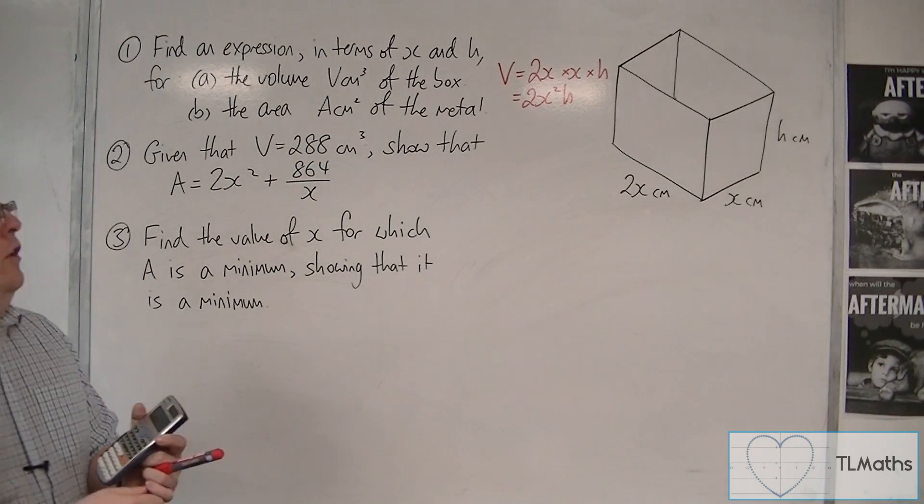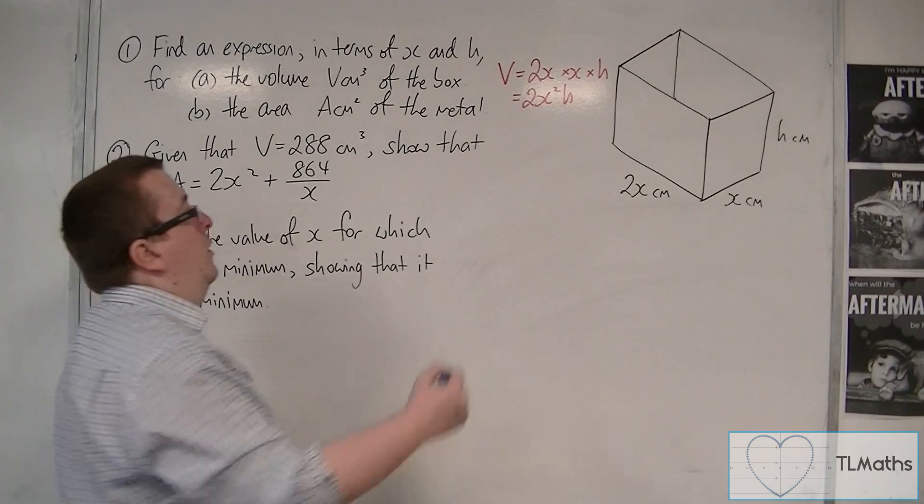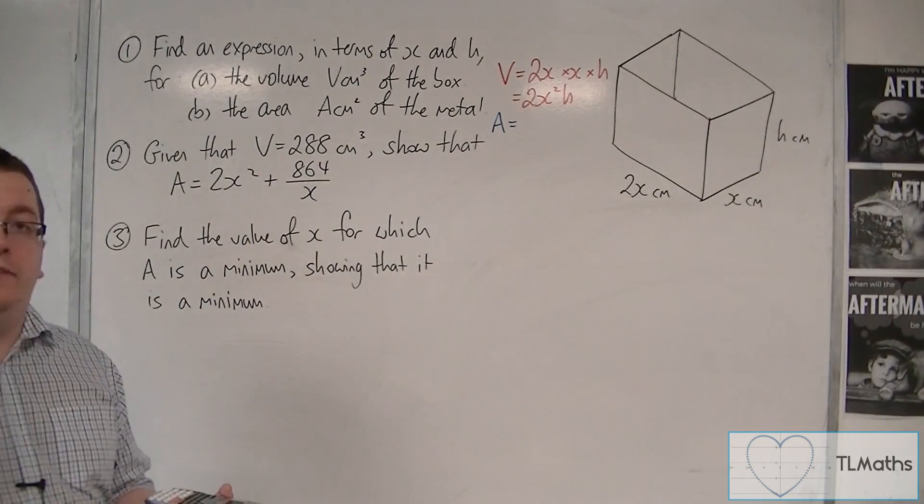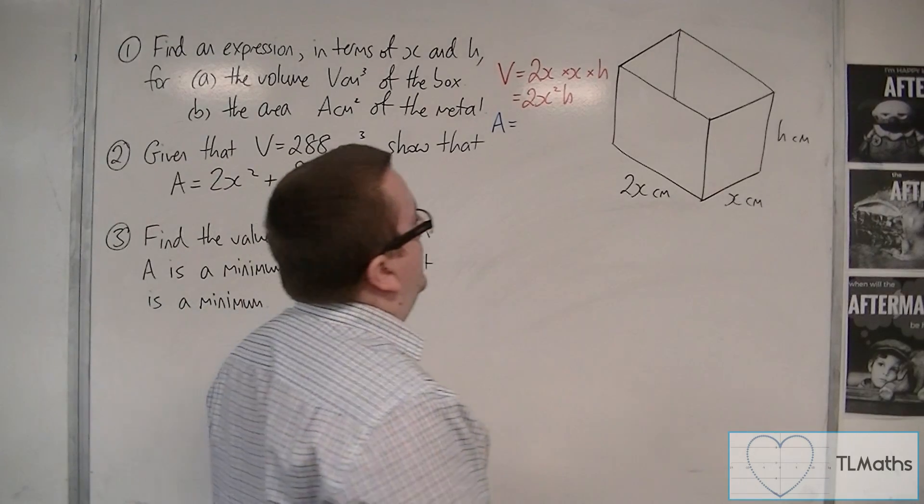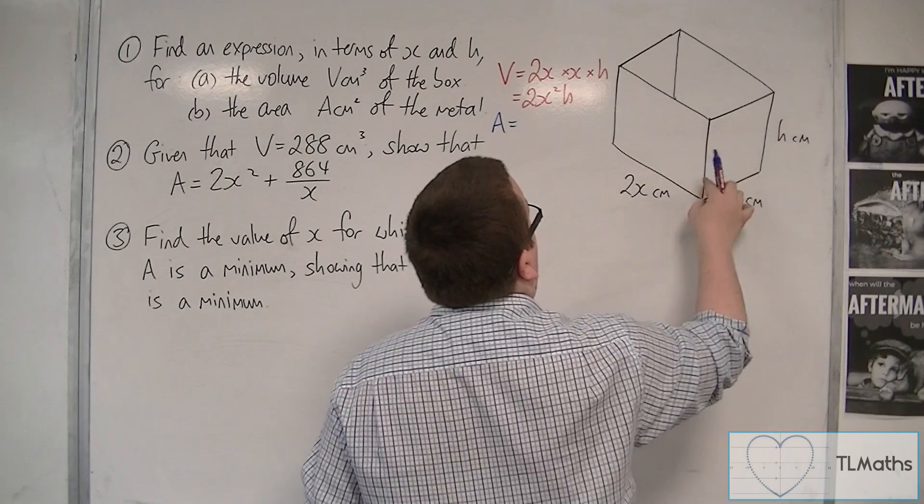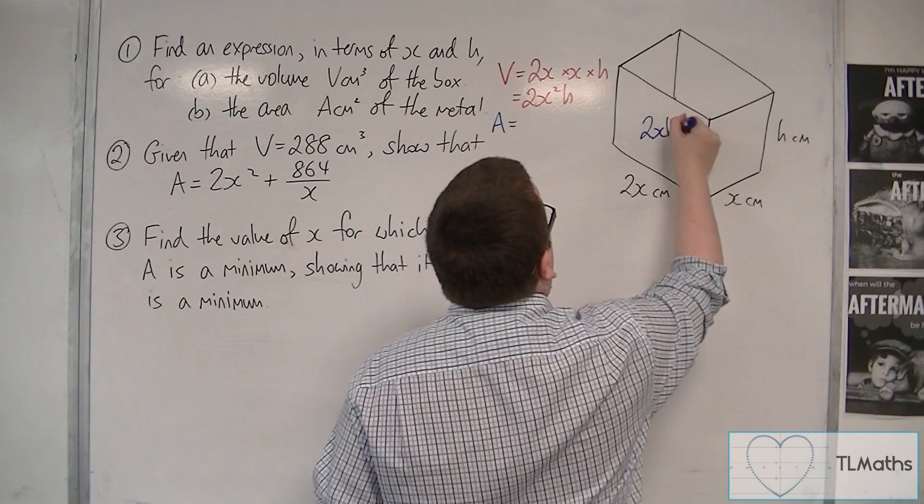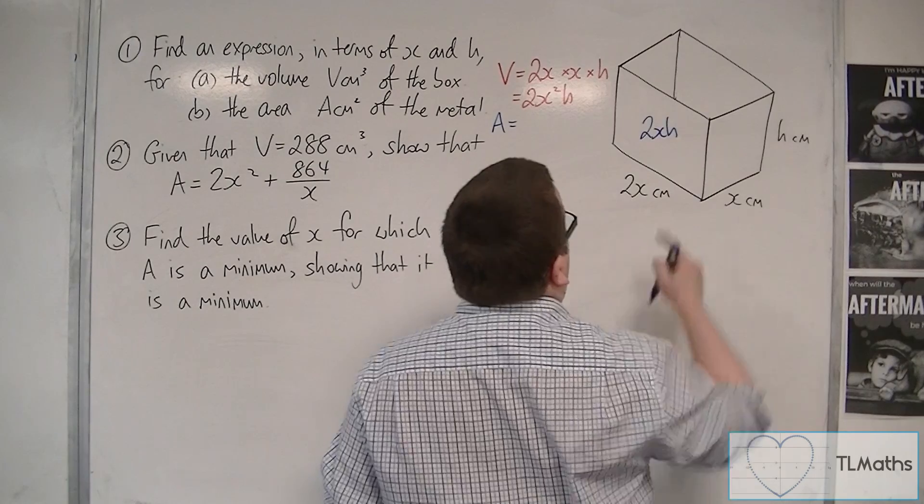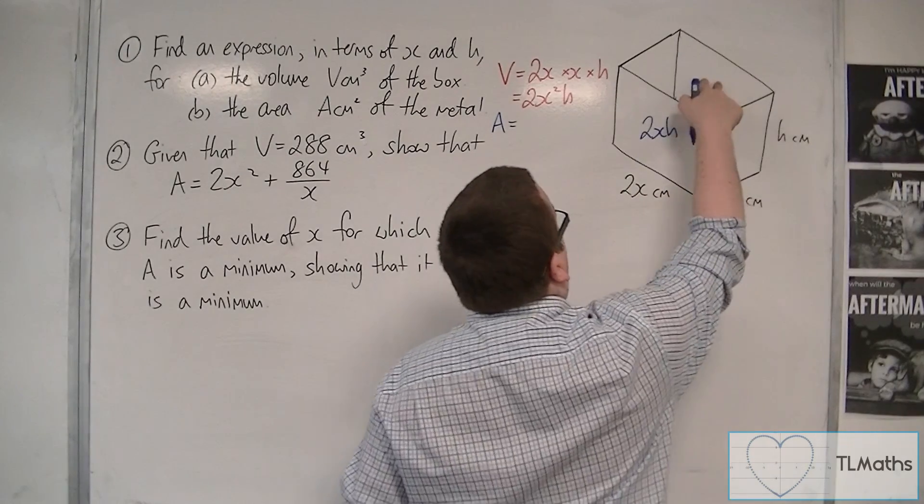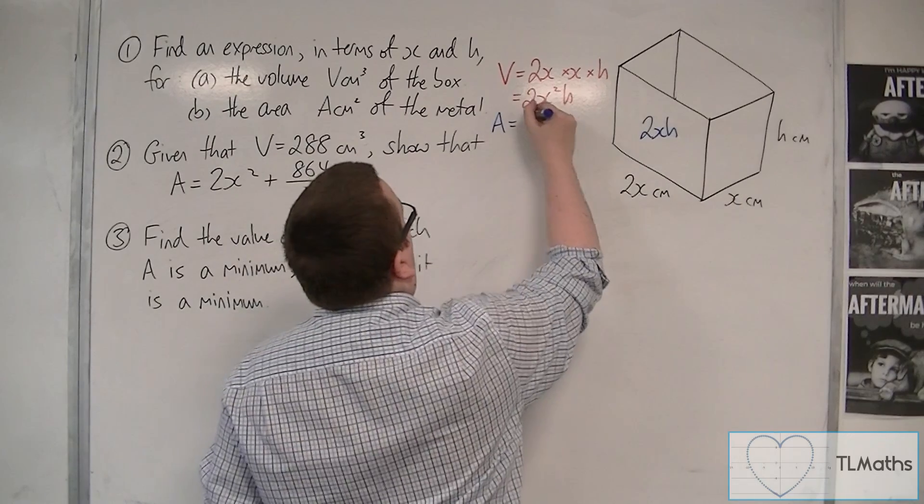Then the area of the metal. So what is the total area of all the sides of the box? So we have this side here, which is 2x times h. So that's 2xh. And we've got 2 of them, because we've got that one and that one. And so that would be 4xh.